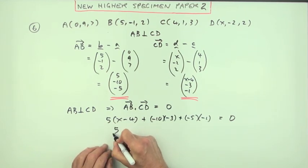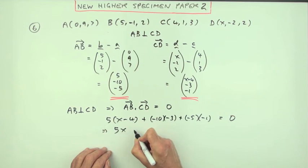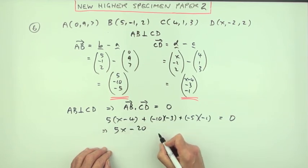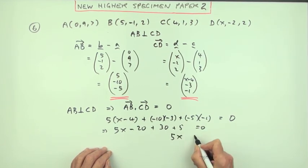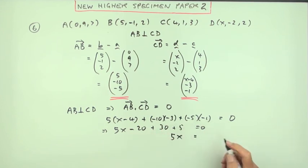So what does this say? That says five X minus twenty plus thirty plus five should come to zero. So five X should equal—we've got fifteen, take it across—that's negative fifteen. So finally X equals, divide by five, negative three. That would be a very simple five marks to get in your exam.